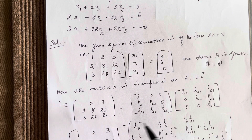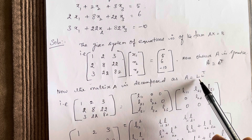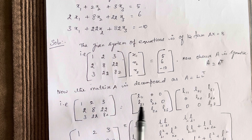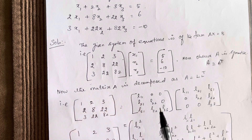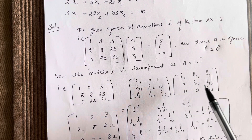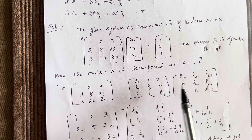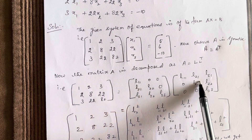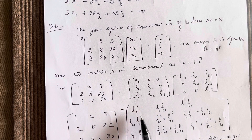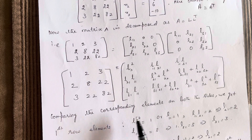Since the matrix is symmetric, we can use the Cholesky method. The matrix A is decomposed as A equal to L times L transpose, where L is a lower triangular matrix and L transpose is its transpose. Substituting and multiplying L and L transpose gives us elements like L11 squared, L11·L21, L11·L31, etc. Since both matrices are equal, we compare corresponding elements on both sides.